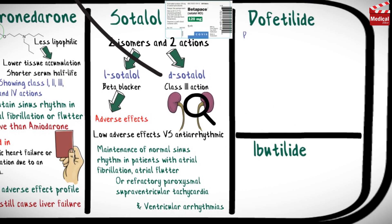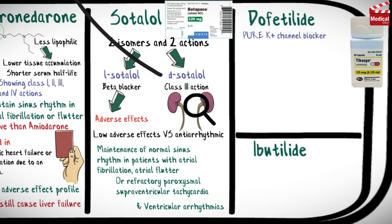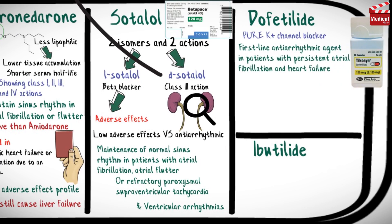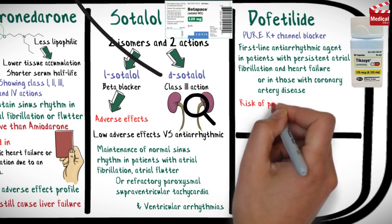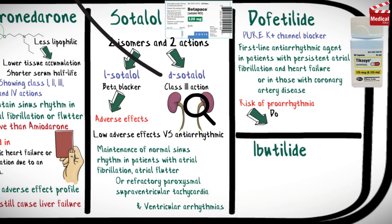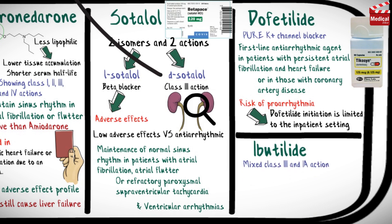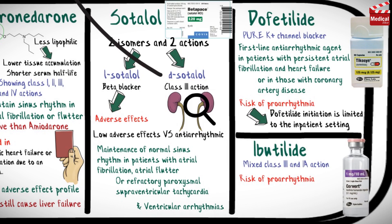Dofetilide is a pure potassium channel blocker. It can be used as a first-line antiarrhythmic drug in patients with persistent atrial fibrillation and heart failure, or in those with coronary artery disease. But because of the risk of proarrhythmia, dofetilide initiation is limited to the inpatient setting. Ibutilide has a mixed class 3 and class 1A action. Like dofetilide, ibutilide also has a risk of proarrhythmia, so its initiation is also limited to the inpatient setting.